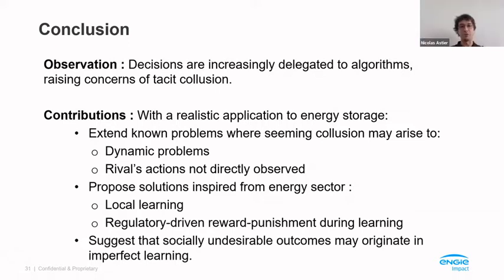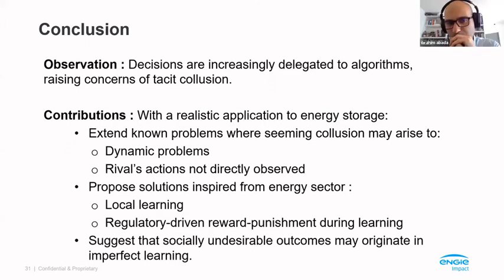And I have a more minor question: you take an energy-to-power ratio of 10 hours, which is much bigger than the power wall ratio of about two hours. Basically, this means the only binding constraint is the power constraint — so does it change something if there's a shorter duration?